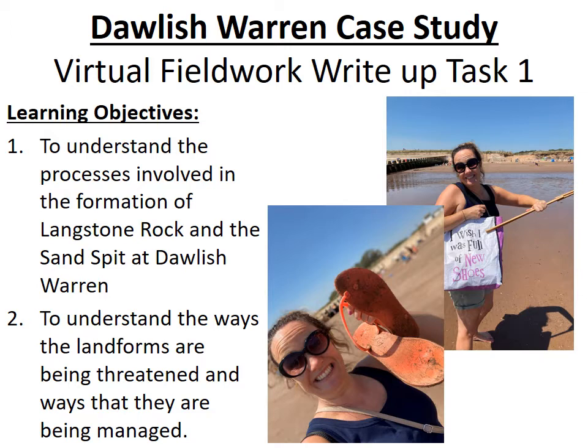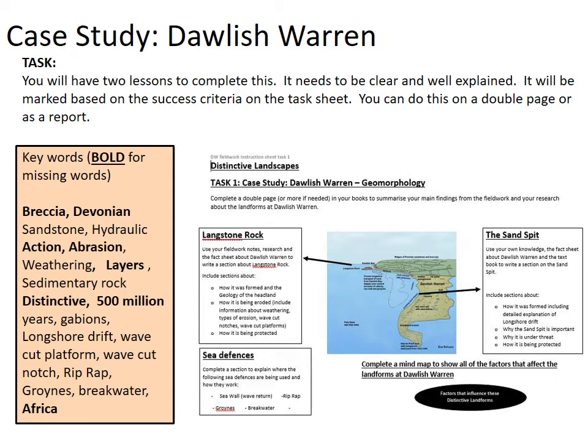This is going to take you two lessons to write up. You'll notice I've attached two documents: one is the fieldwork instructions which tells you what to do for each section, and there's another lower ability one for those with a target grade of five or less, or if you just want to use it as a guide since you're at home on your own. You can type it up or do it as a double page in your book. There's also a load of key words on this page for spellings and just to recap your memory.